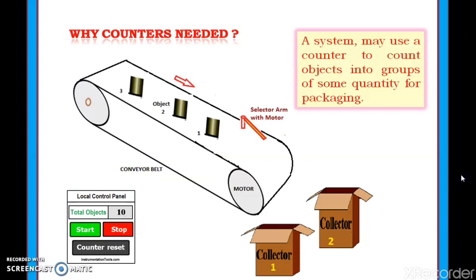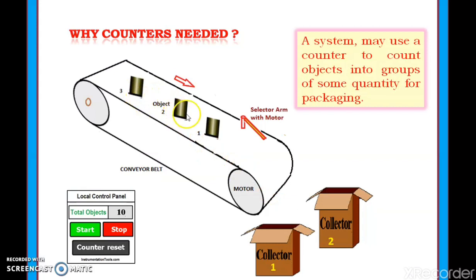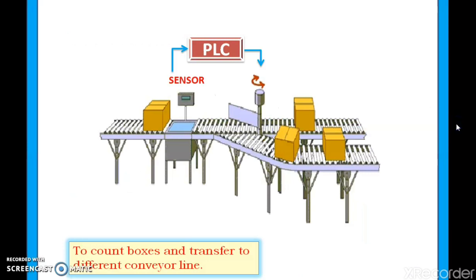First question is: why are counters used? Let's think about packaging of objects into a box. When a specific number of objects are sent to one box, a selector arm is there. This arm will move and shift the objects to another box. We have to count the number of objects passing to one box, and after that we shift to another.